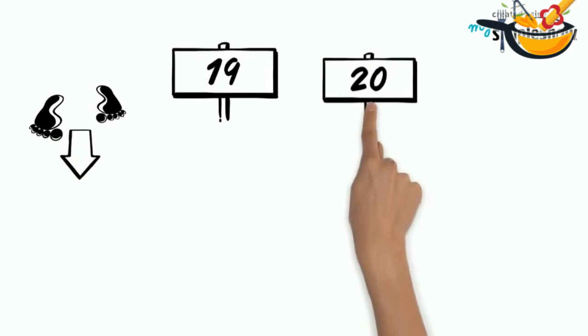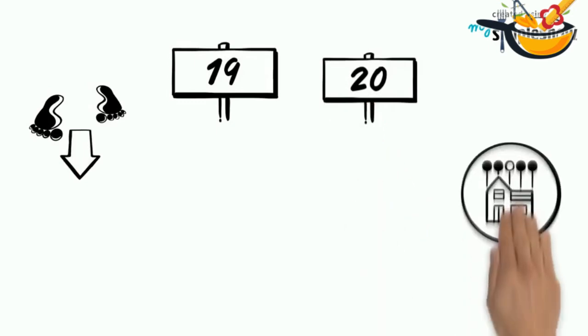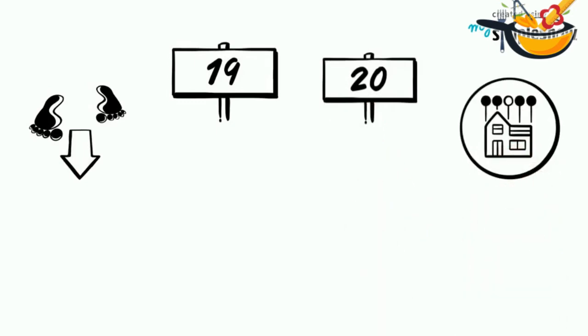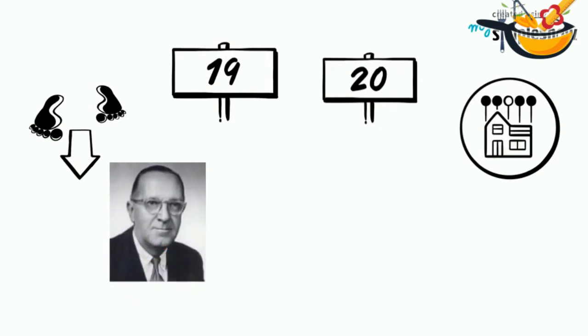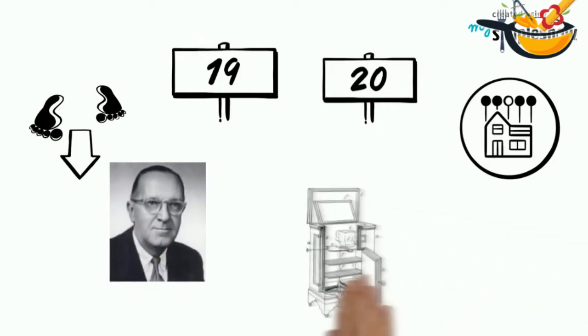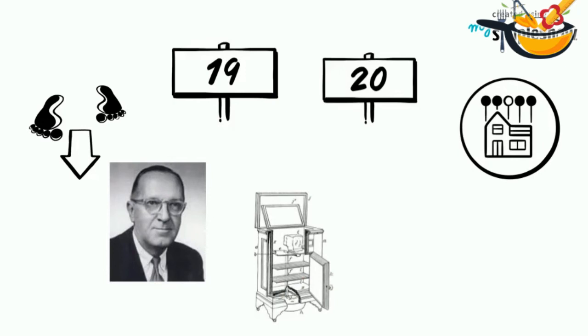Moving forward from the 19th century to the 20th century, trials to make an applicable home fridge still existed. Fred W. Wolfe made a prototype of a fridge with an icebox on its top. This was in 1913.